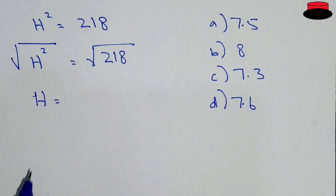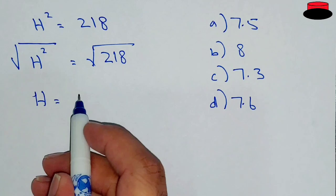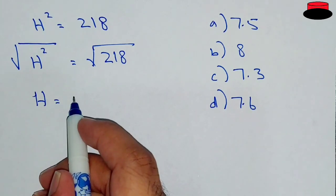So the twice of 7.5 will be 15, so it will never be 7.5. It should be less than 7.5 because we have square root of 218, which is less than 225, which is the square of 15.